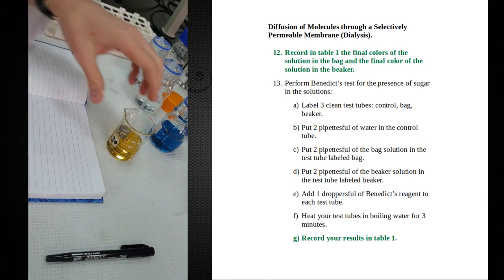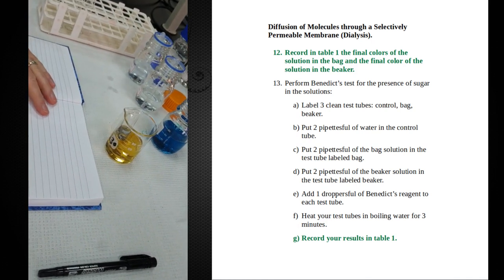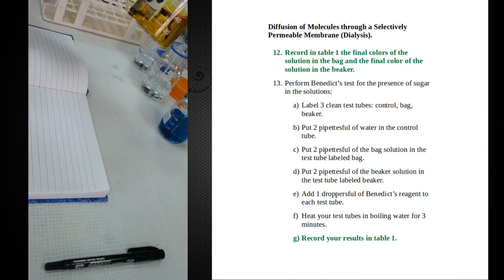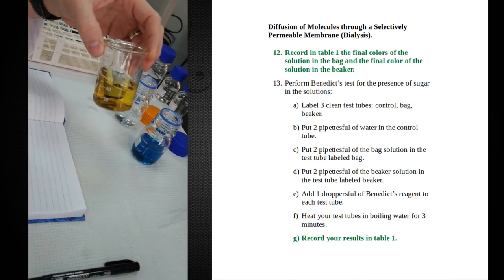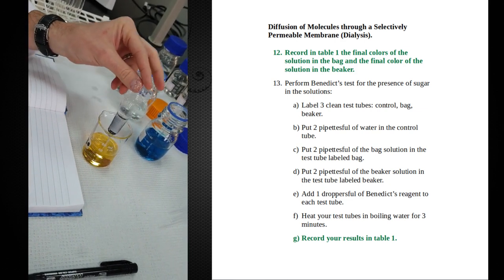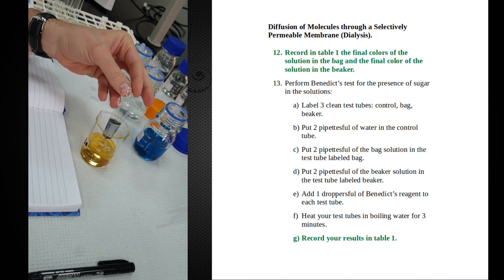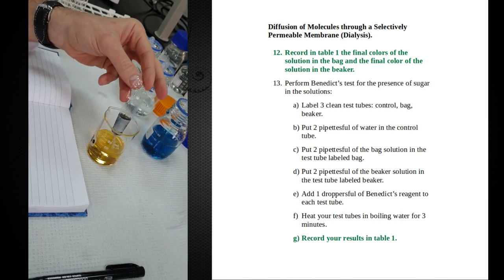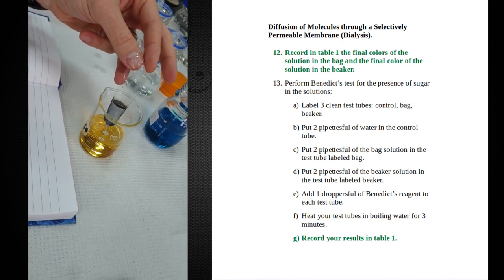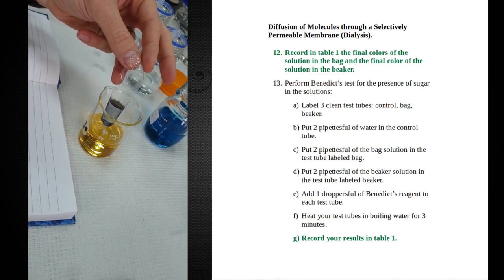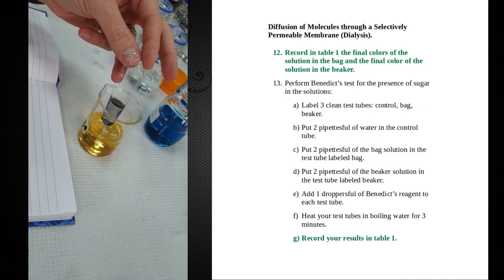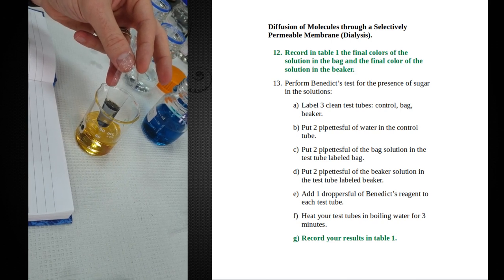Let's talk about our results from the dialysis tubing experiment. What we see here is that the beaker itself has not changed color, which means that starch has not left the dialysis bag. What we also see is that the dialysis bag itself has actually turned blue, which means that iodine has entered the bag. That tells you two things. Starch is too large to come out of the bag, so the pores are too small. It also tells you that iodine is small enough to pass across.